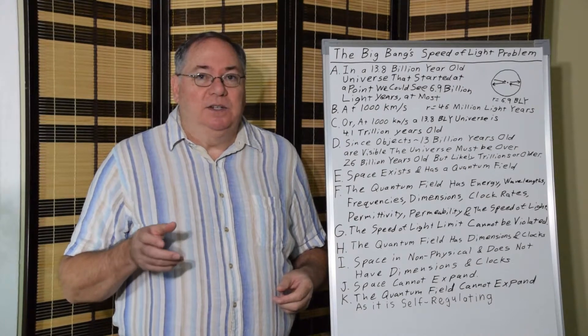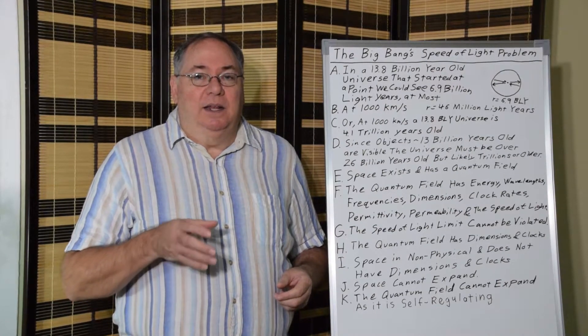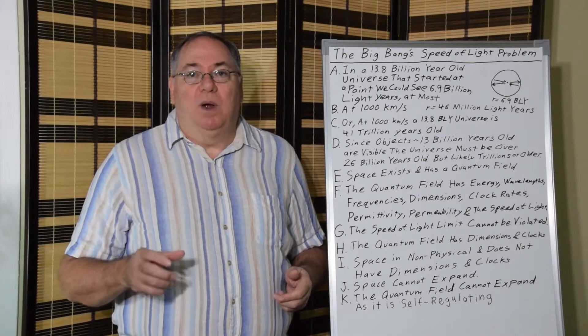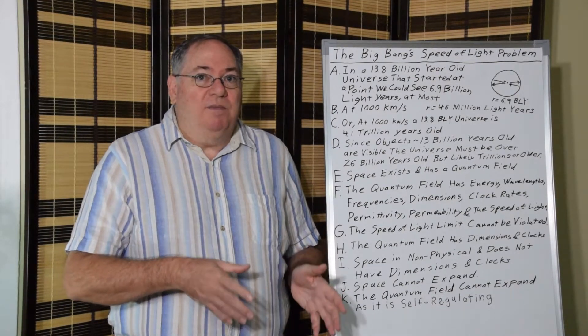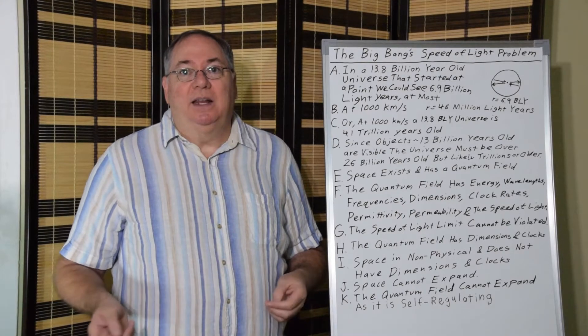And if you multiply permittivity times permeability, you get 1 over the speed of light squared. So, the speed of light is determined by the electrical properties of the quantum field. So, given the quantum field exists, the speed of light limit exists.